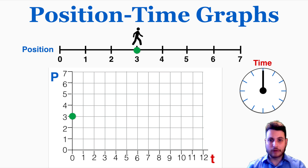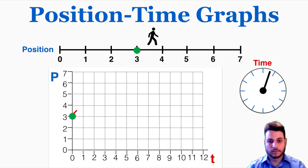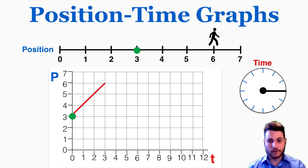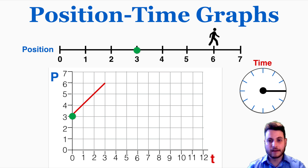I'm now going to allow time to pass and you're going to observe how that affects the position graph as the person moves. You can see that they moved from a position of 3 to a position of 6 and it took them 3 seconds, so they're moving up one unit of position for every second that passes, and you can see that's reflected on the graph.